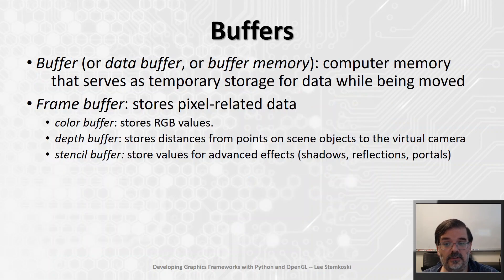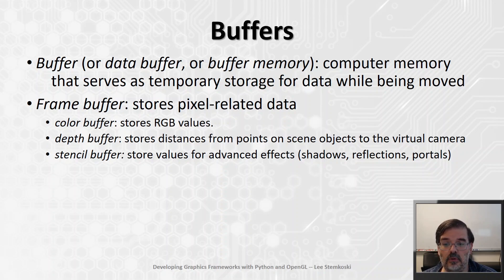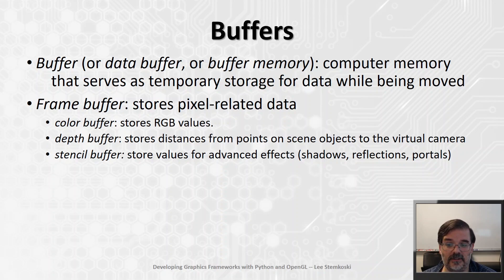In computer science, buffers are very important, especially in computer graphics. A buffer is a part of computer memory that serves as temporary storage for data while it's being moved from one location to another. Pixel data is stored in a region of memory called the frame buffer. A frame buffer may contain multiple buffers that store different types of data for each pixel. At a minimum, the frame buffer must contain a color buffer, which stores red, green, and blue values.